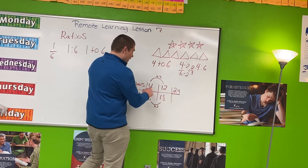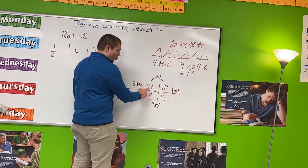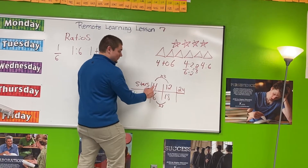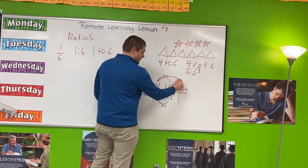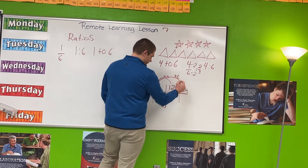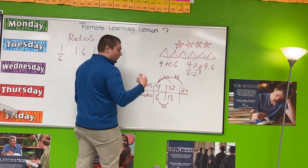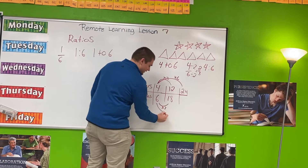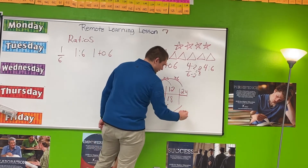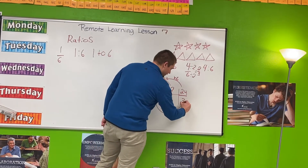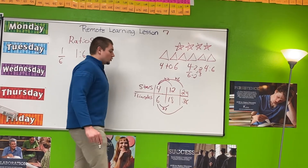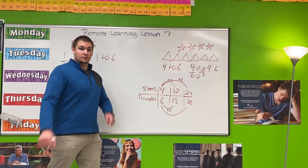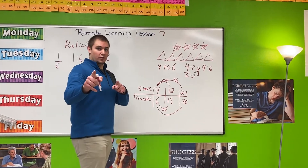Thinking the same way, how many times can four go into 24? Four times six is 24. So whatever I do to the top, I must do to the bottom. Six times six is 36, and all of these ratios are equivalent to one another. Stay tuned for number eight.